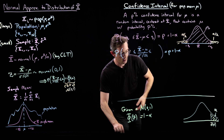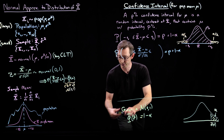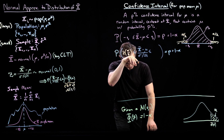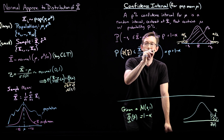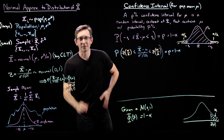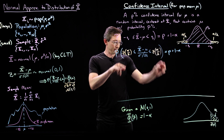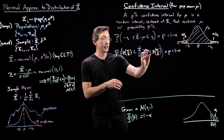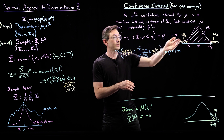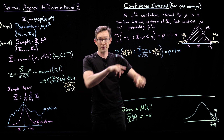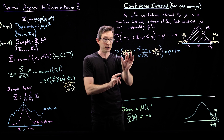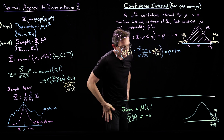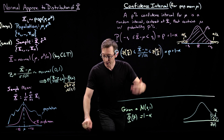What I want is the cumulative distribution function where the area to the left is alpha over 2. So this is going to be minus z of alpha over 2 and plus z of alpha over 2. I want the area to the right of the upper bound to be alpha over 2, and the area to the left of the lower bound to also be alpha over 2. This gives me my confidence interval for mu: x-bar plus or minus this value.